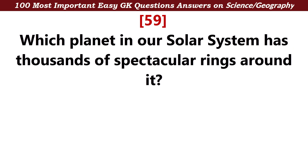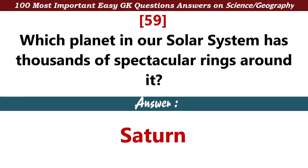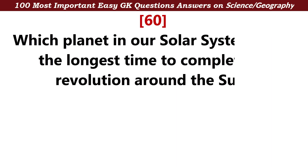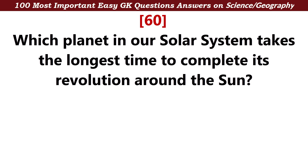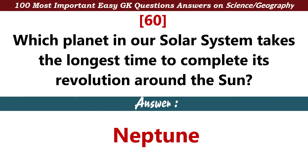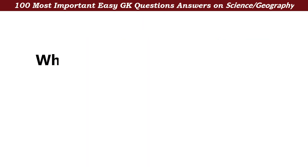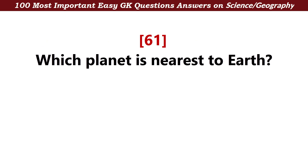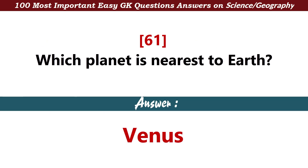Which planet in our solar system has thousands of spectacular rings around it? Answer: Saturn. Which planet takes the longest time to complete its revolution around the sun? Answer: Neptune. Which planet is nearest to Earth? Answer: Venus.